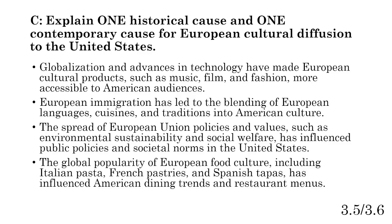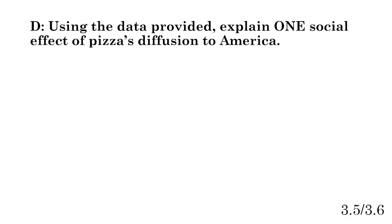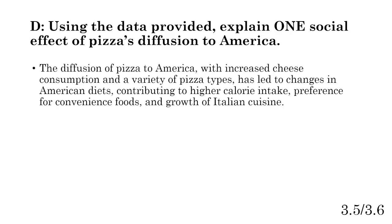You get one point for a historical cause and one point for a contemporary cause in Part C. Part D: using the data provided, explain one social effect of pizza's diffusion to America. You're talking about how diffusion affects the culture and society where it's spreading to. The diffusion of pizza to America, with increased cheese consumption and a variety of pizza types, has led to changes in American diets. Since the question says 'use the data provided,' you should reference the graphs.